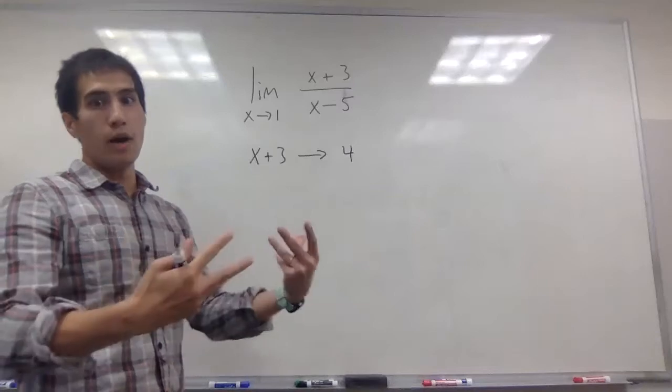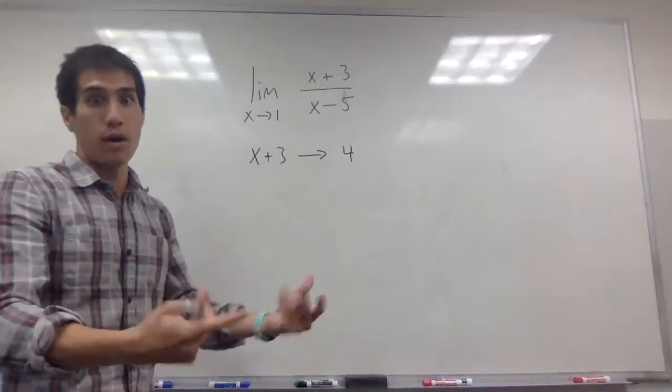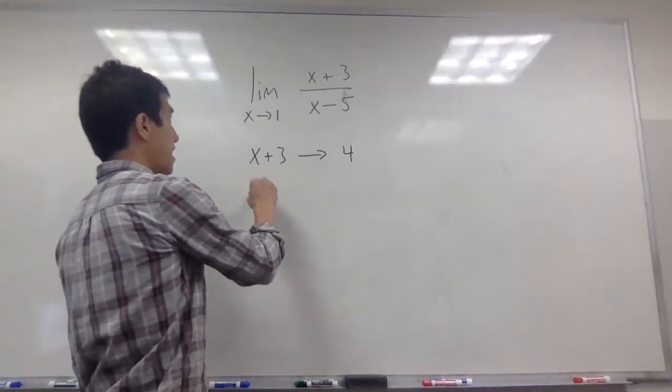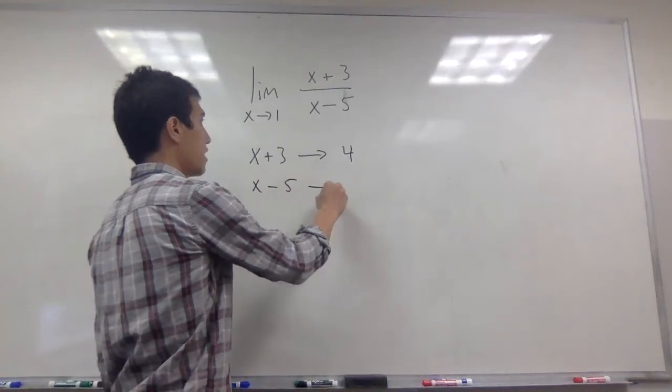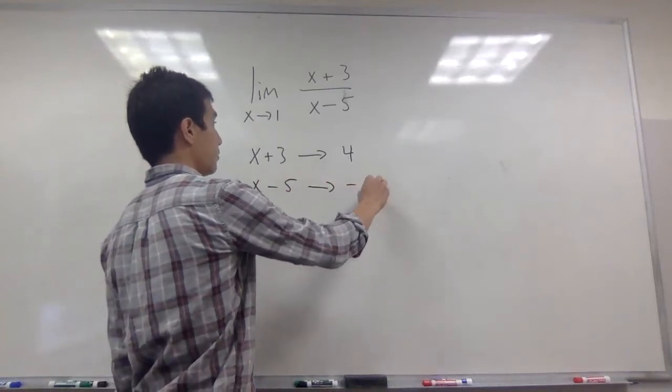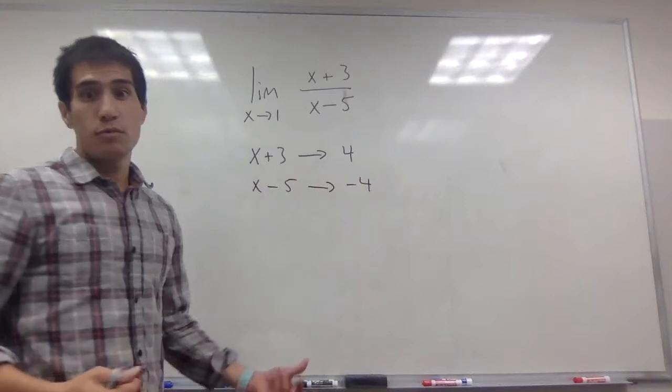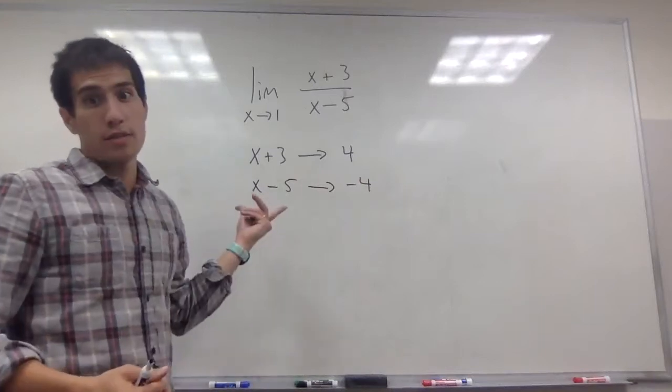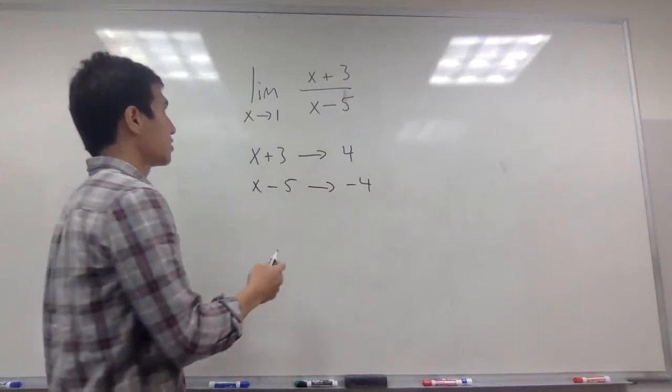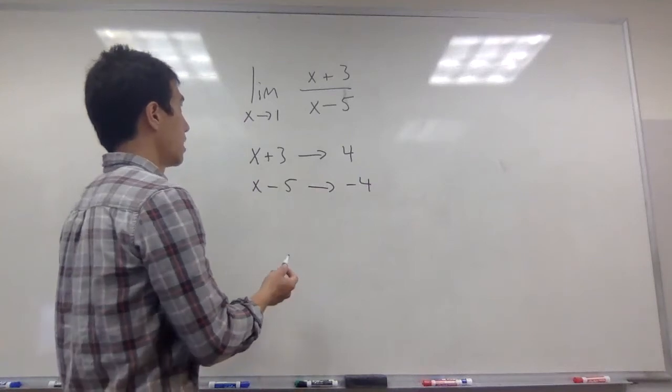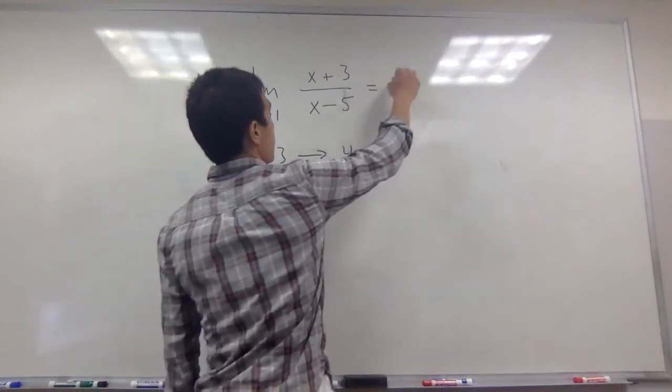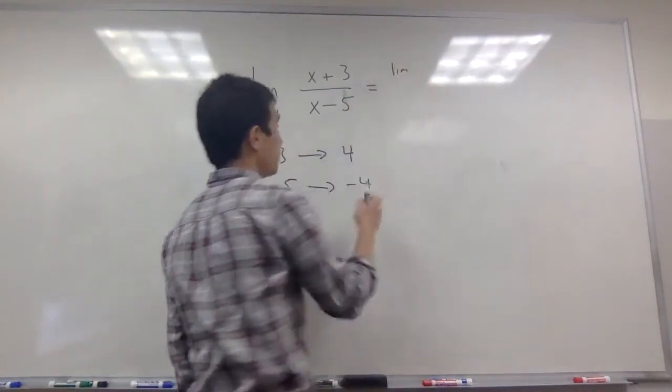As x gets close to 1, x plus 3 is close to 4. And as x gets close to 1, x minus 5 is going to negative 4. If x is close to 1, then x minus 5 is close to negative 4. And so using the limit laws, I can say that this limit is going to equal the limit, since both of these exist.